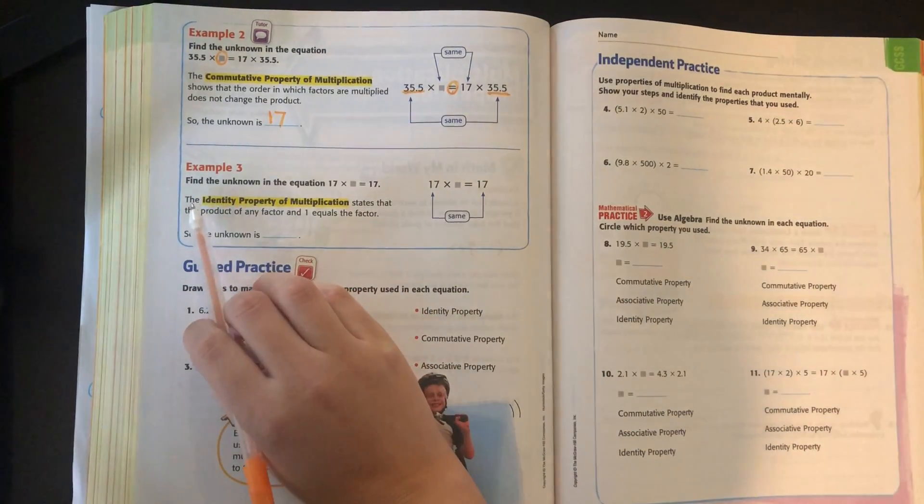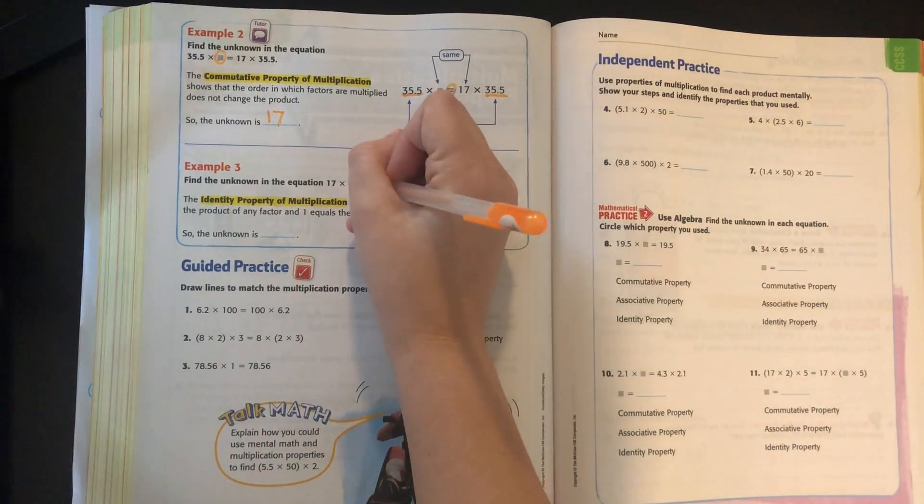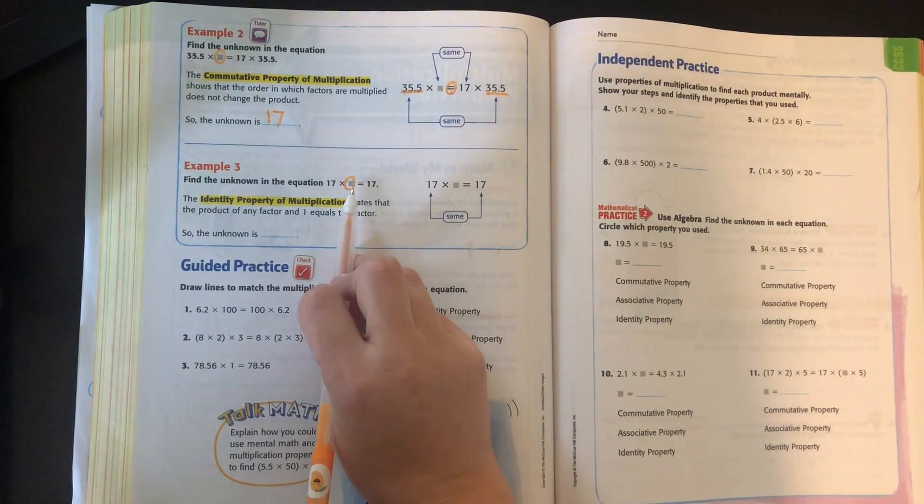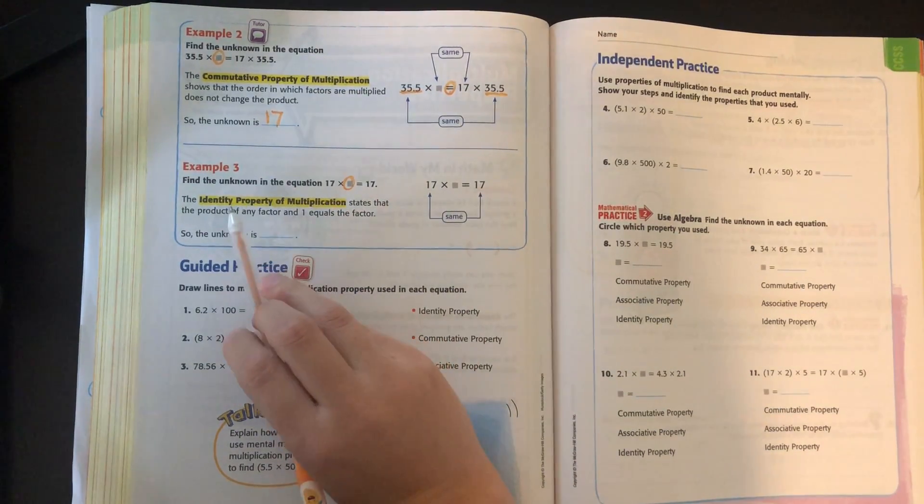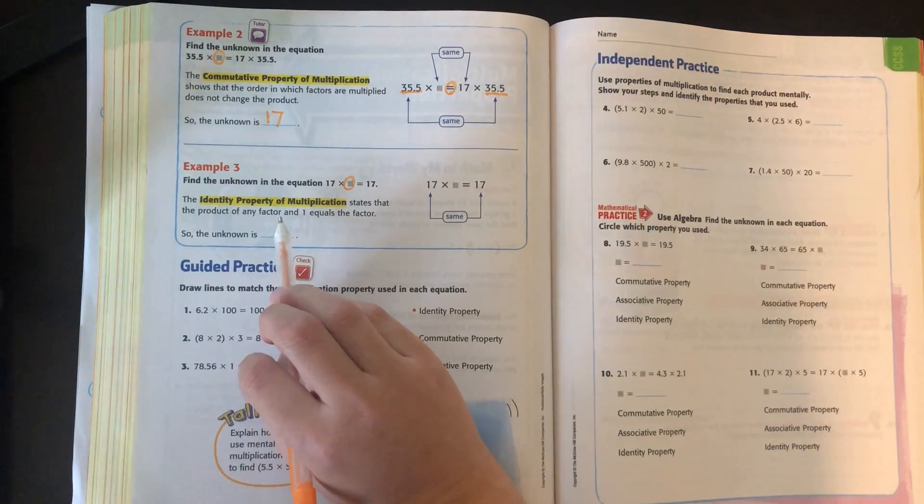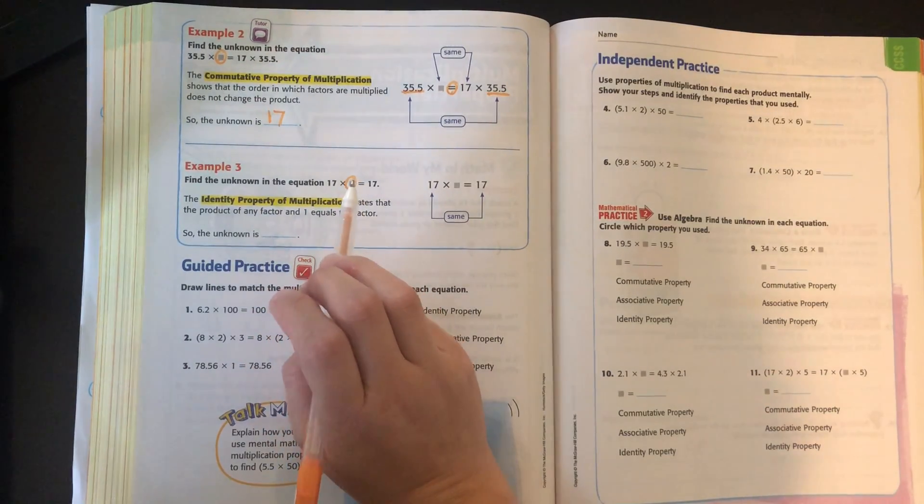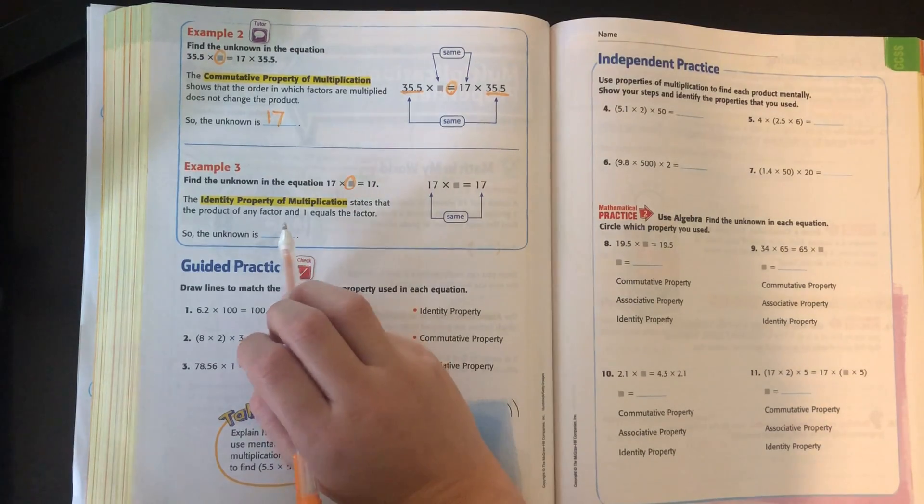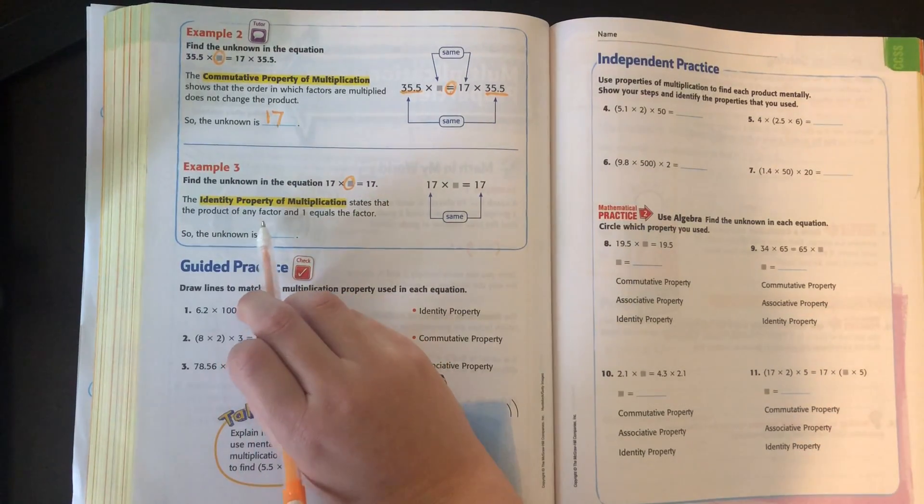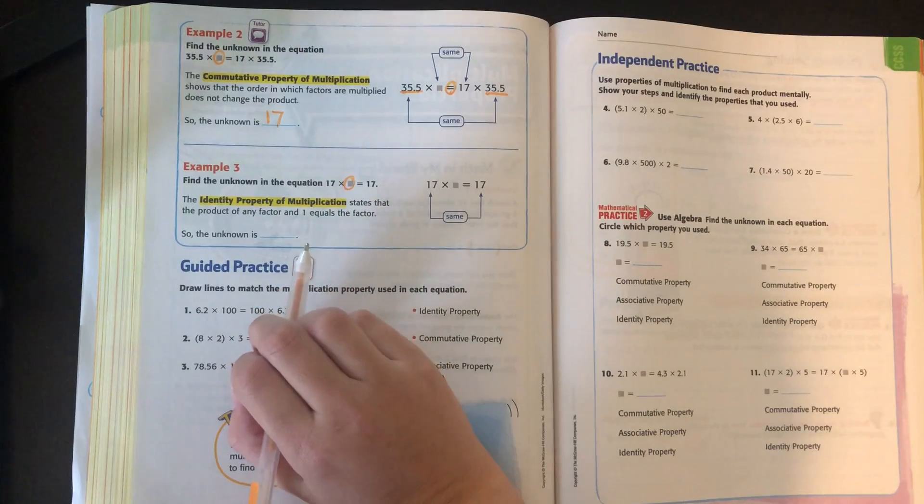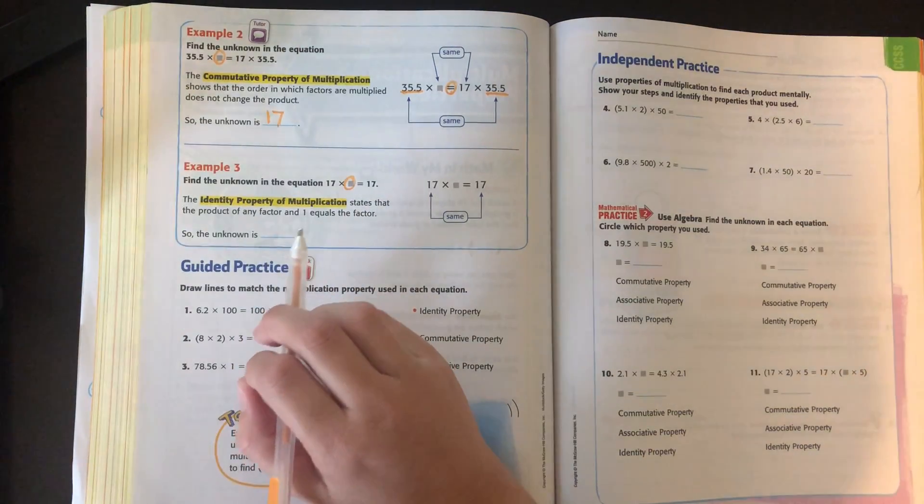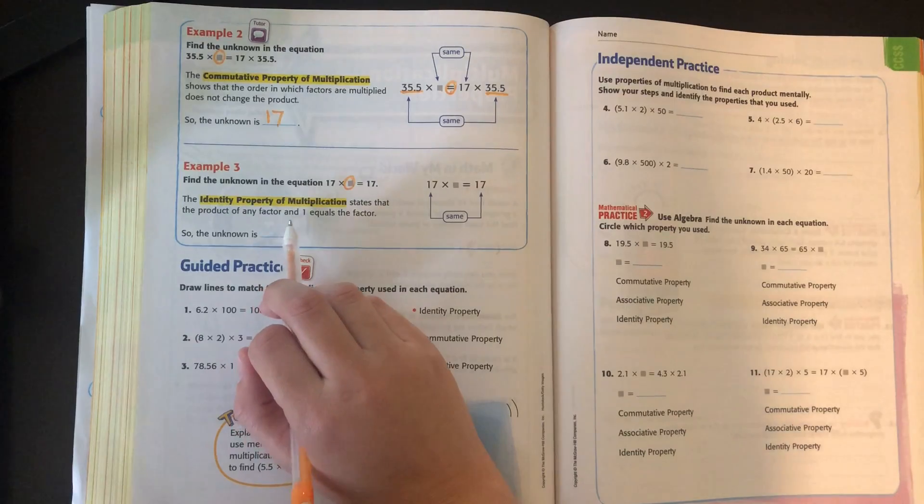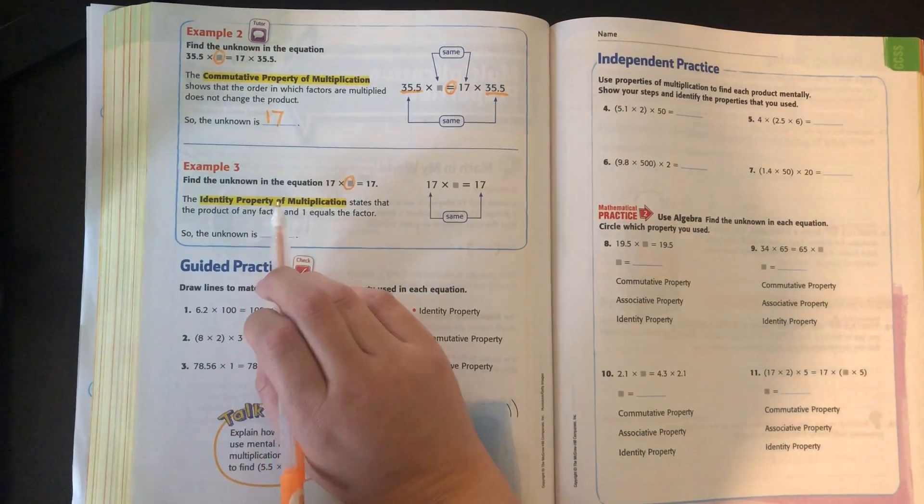17. And our third example, find the unknown in the equation 17 times something equals 17. The identity property of multiplication, same as the identity property or very similar to the identity property of addition, states that the product of any factor in one, so anything times one equals the factor. Remember with addition, it's anything plus zero. But in multiplication, anything times one equals that number.